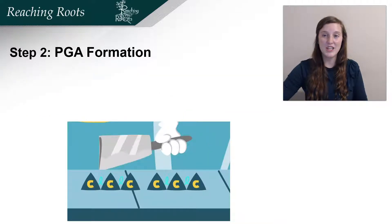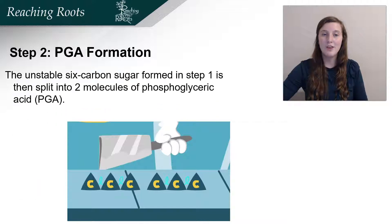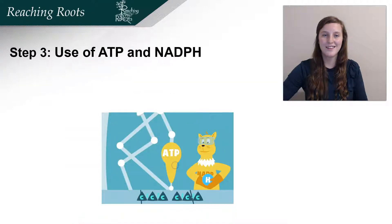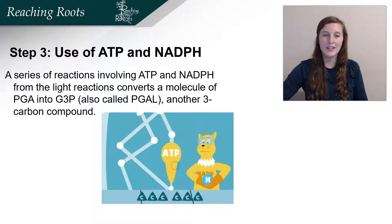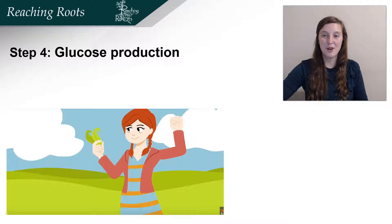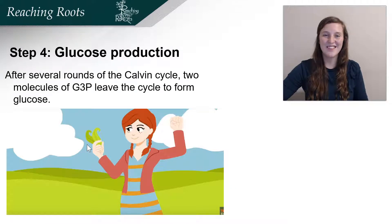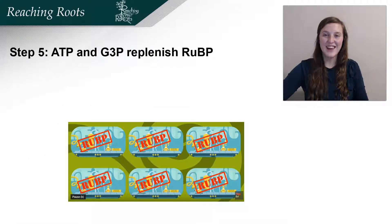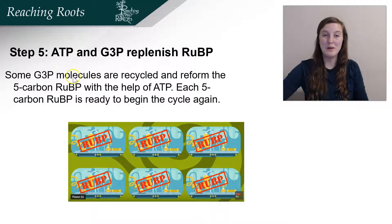Step two was PGA formation. The six-carbon molecule that Rubisco made in the previous step is unstable, so this six-carbon sugar is then split into two molecules of PGA. Then using ATP and NADPH, PGA is turned into G3P, also called PGAL. This is another three-carbon compound that's more stable. Some of those G3Ps made in the Calvin cycle are used to create glucose. Next it's necessary to replenish the RuBPs — some of the G3P molecules are recycled and reformed to create RuBP.